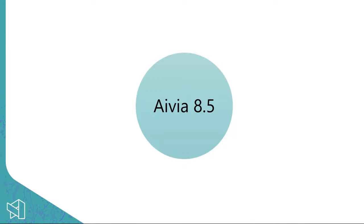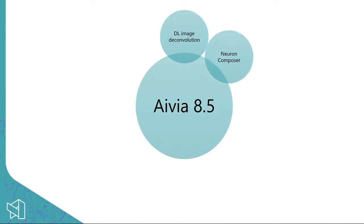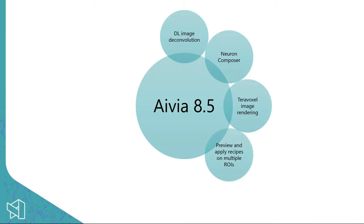Avia 8.5 includes a number of features. I've alluded to some of them already, but this is the full list of key features. The first thing I'll be talking about is using deep learning for image deconvolution. After that, I'll be covering the predictive tools of our Neuron Composer, which is a complete platform for reconstructing 3D neurons in dense, large data sets.